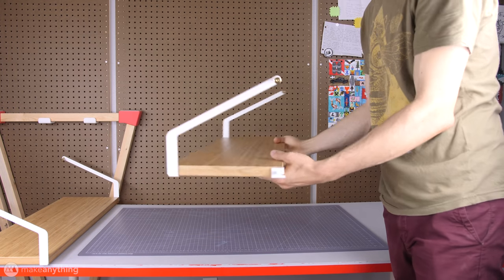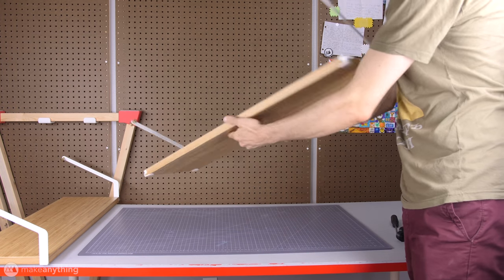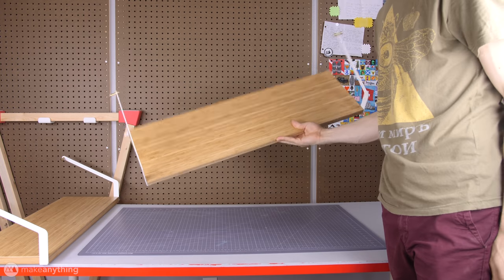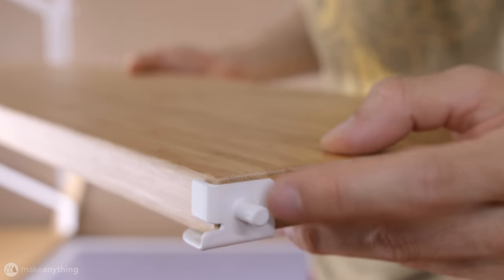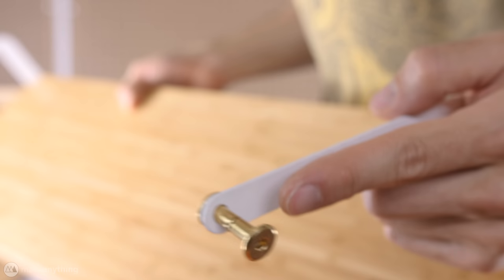So here are the shelves assembled as they were intended, made for that rack system which I clearly don't have. So it's got this special hardware meant for hooking on to that system, but in my case we're going to have to improvise.